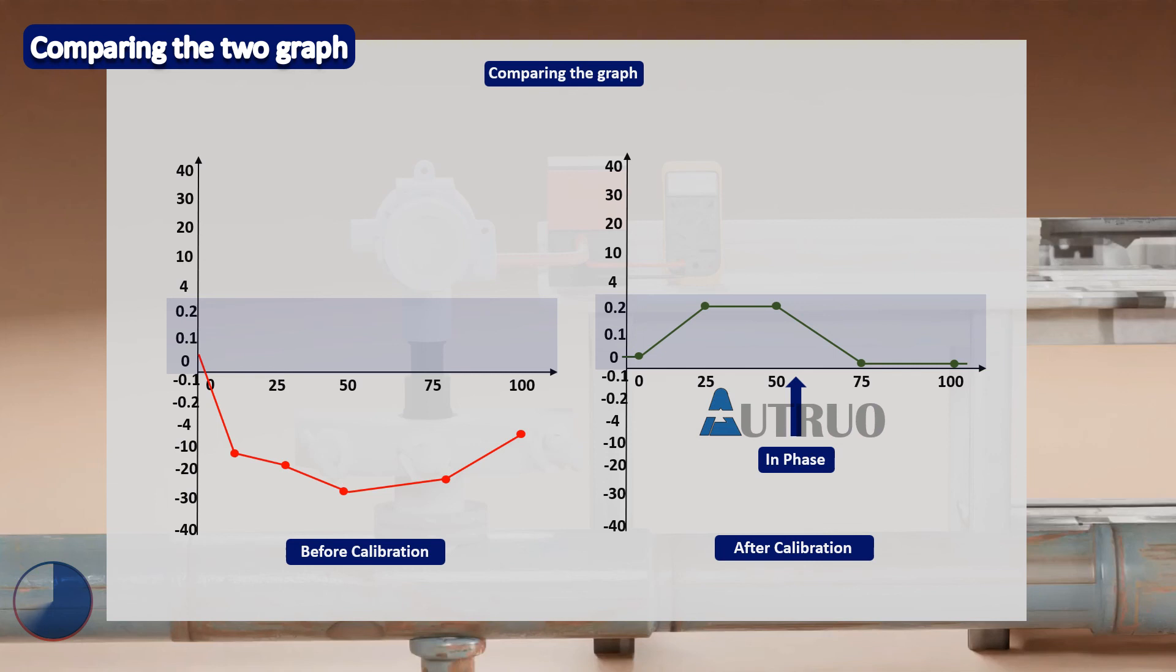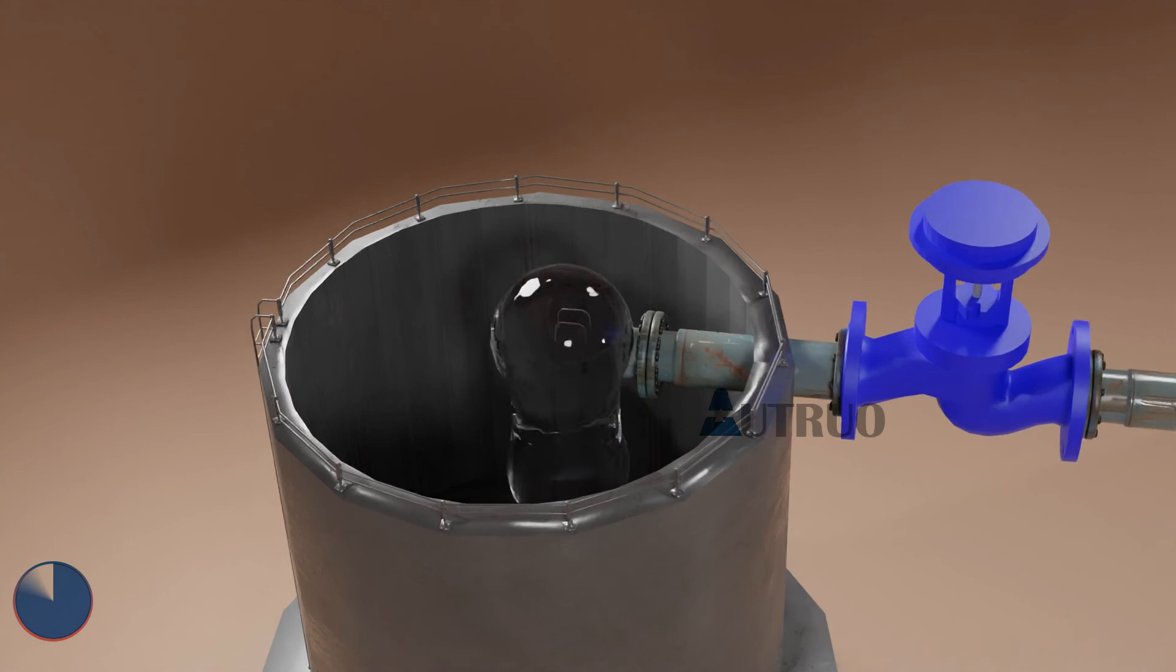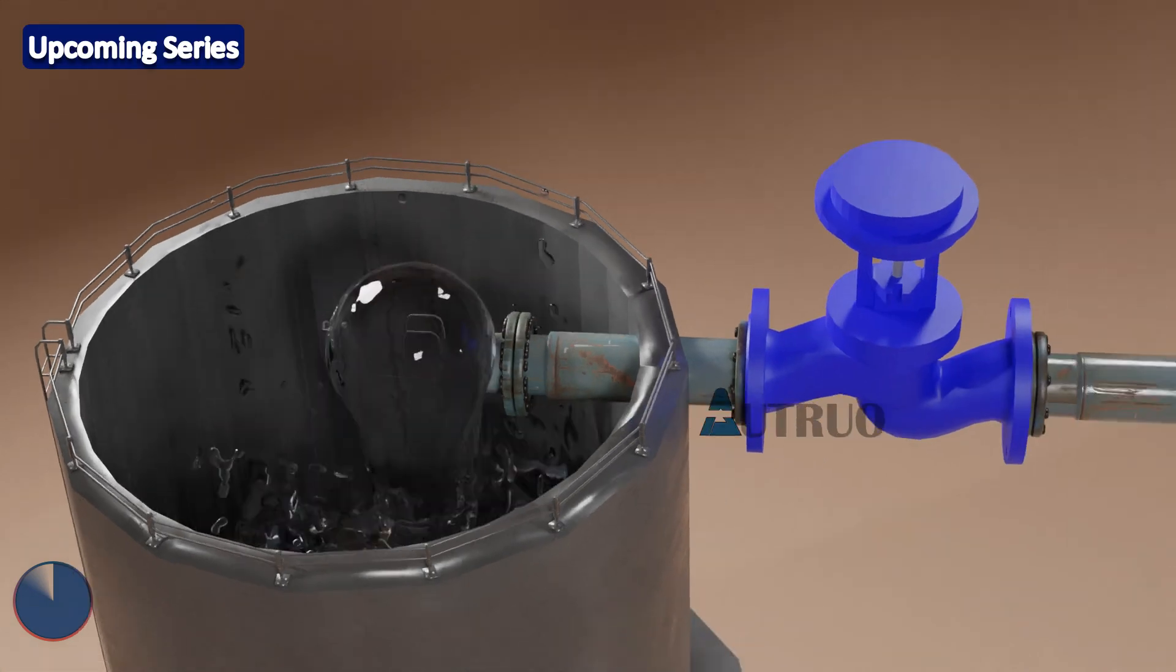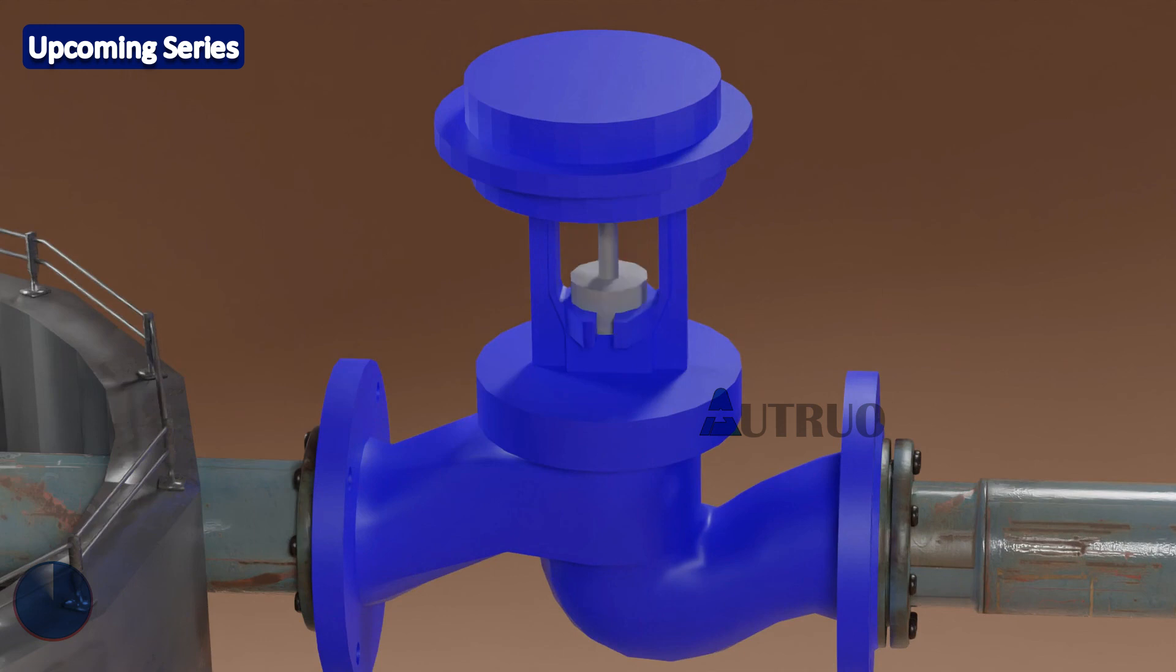Now what we just did is known as transmitter trimming. What we did was to trim off the transmitter in such a way that the current signal will be equivalent to the fluid flowing within a pipe. Hence, a well functioning transmitter will improve the quality of the products produced, because the current going to the PLC will represent reality. That is, when we allow 10 gallons of water to flow within a pipe, we will be getting 10 gallons at the output of the tank before the PLC closes the inlet valves of the process equipment.